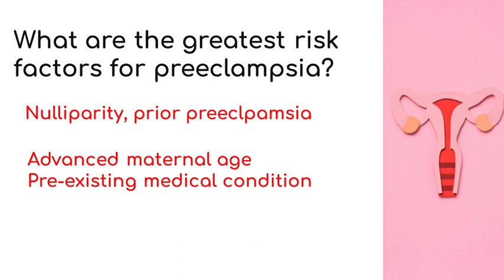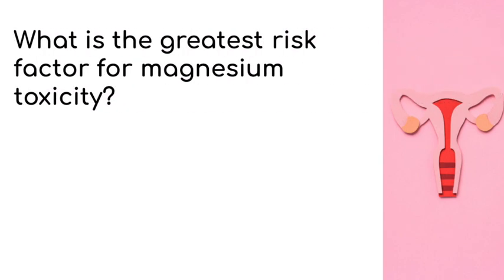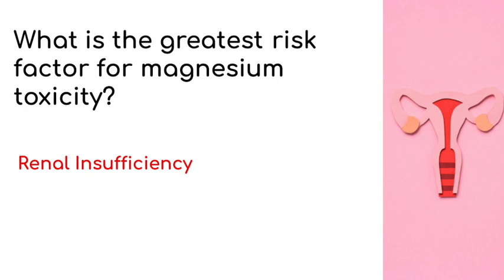What is the greatest risk factor for magnesium toxicity? Renal insufficiency, because magnesium is renally cleared. If a patient presents with an elevated serum creatinine, they may require a lower dose and very close observation for magnesium toxicity. Hyporeflexia is the first sign of magnesium toxicity. To manage these patients, first stop the magnesium and give IV calcium gluconate to reverse neuromuscular paralysis and prevent cardiac arrest.